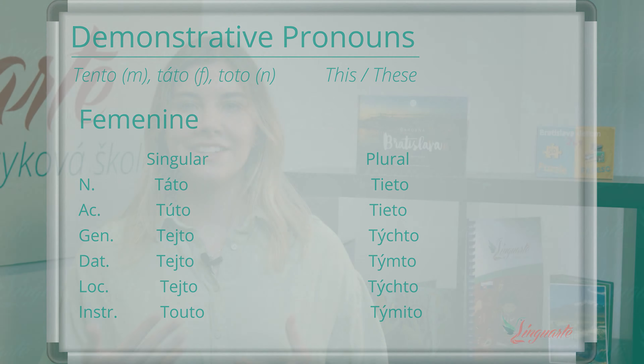Second type: Ten — masculine, Tá — feminine, To — neutral. These pronouns are used for objects or people that are far from the person speaking, but not too far.